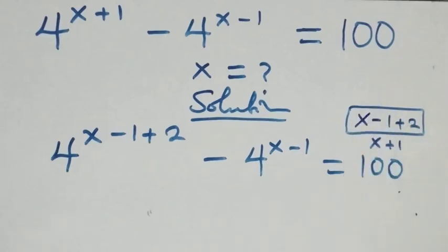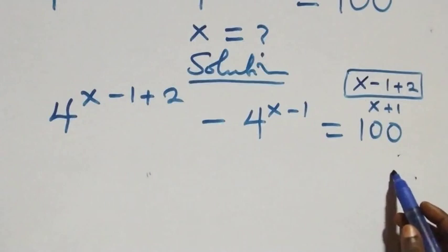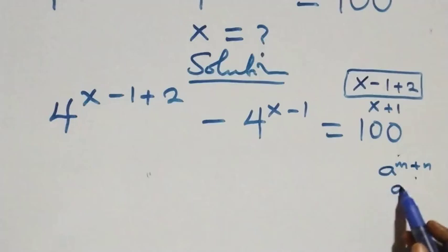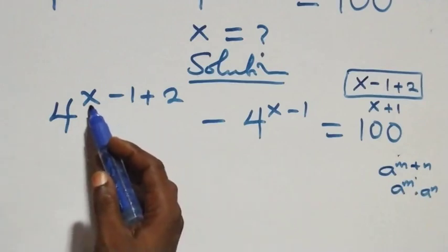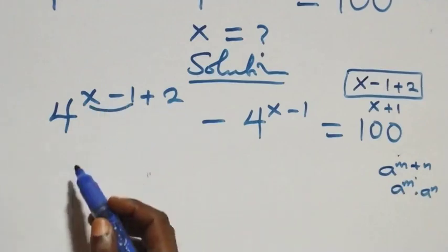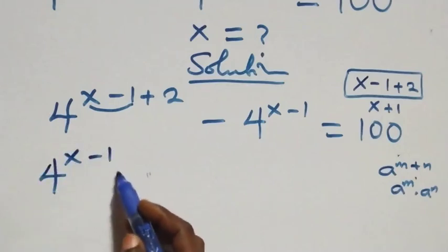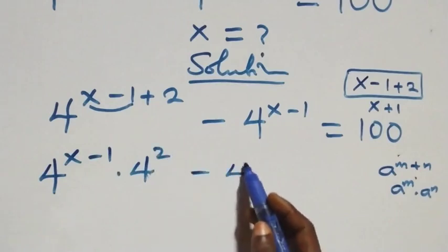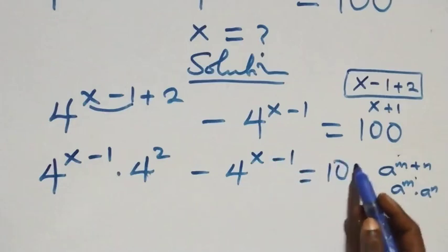From this side, following the law of indices, we have e raised to power m plus n, which is the same thing as e raised to power m times e raised to power n. We can treat m as x minus 1 and n as 2. So we have 4 raised to power x minus 1, times 4 raised to power 2, then minus 4 raised to power x minus 1, equals 100.